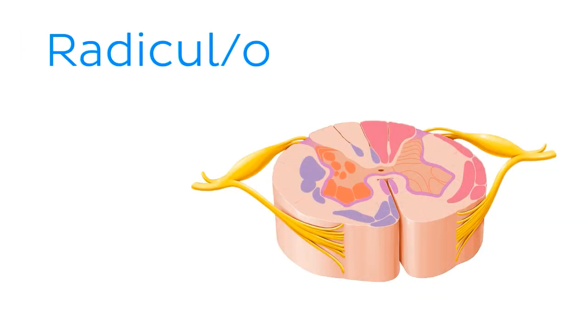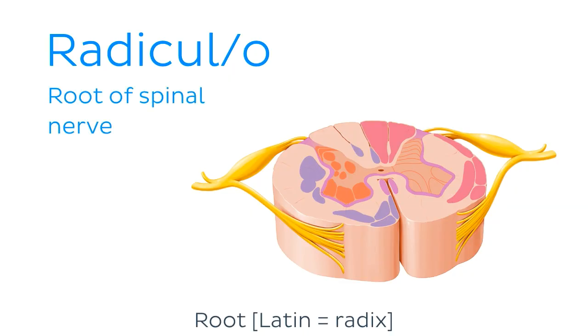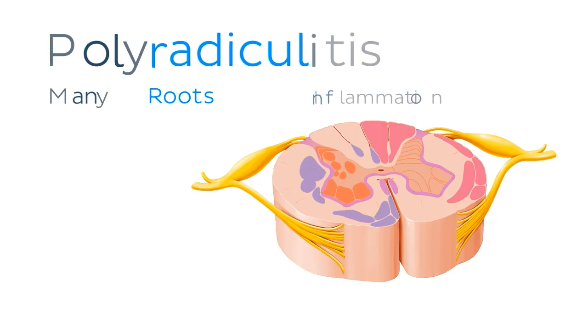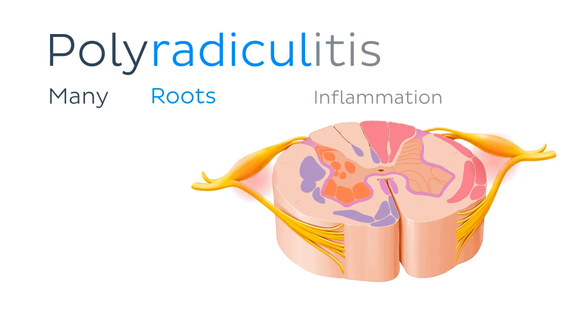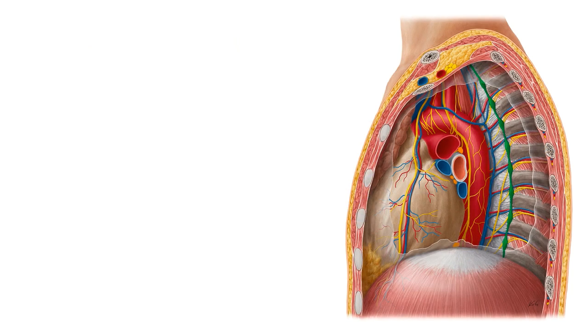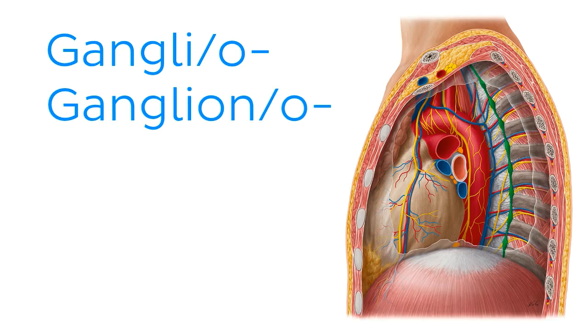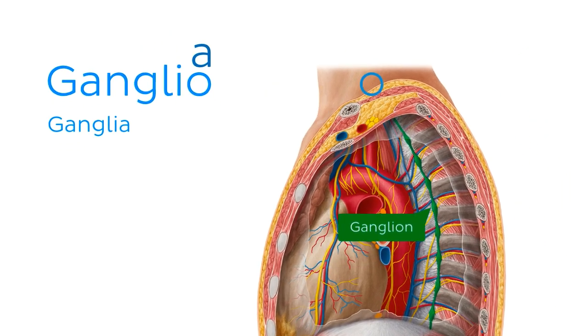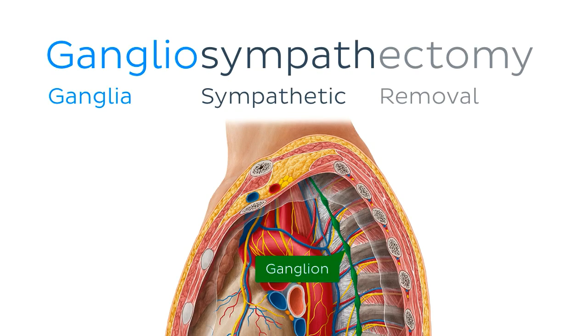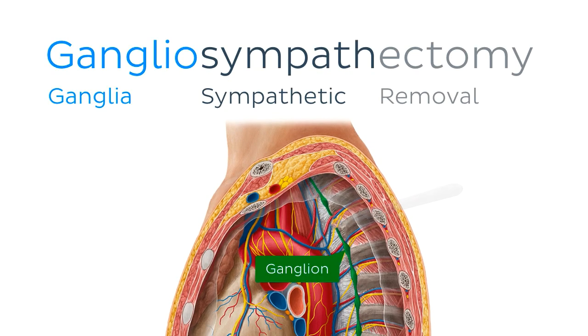Also related to the spinal cord is radicule or radiculo which refers to the root of a spinal nerve. For example, polyradiculitis is the inflammation of several spinal nerve roots. And our final root word for this section of our tutorial is ganglie or ganglio, or ganglion or gangliono which of course refers to ganglia. These are oval-shaped structures in the peripheral nervous system which function as exchange or relay station for nerve signals. Gangliosympathectomy is the procedure involving the removal of sympathetic ganglia.